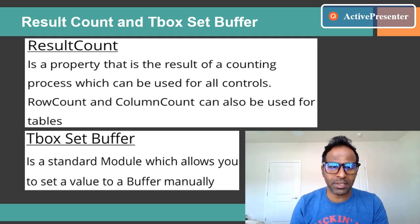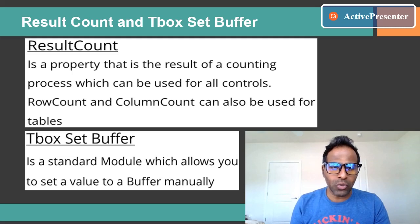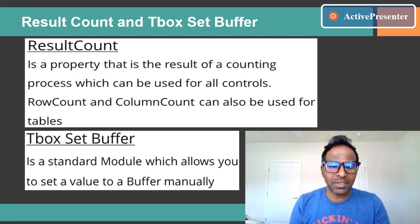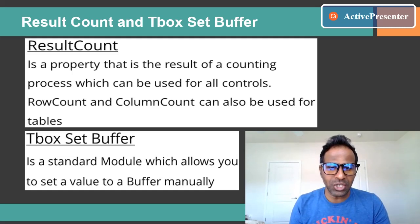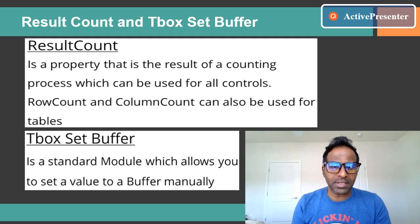Our third agenda item is result count and our fourth is TBox Set Buffer. Result count is a property that results from a counting process which can be used for all controls. For example, on an order history page you may have tens of orders placed in the past — result count gives you the number of orders on that page. It can also be used for row count and column count for HTML tables.